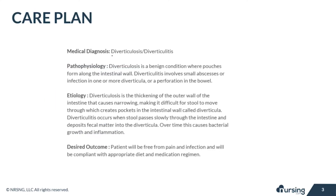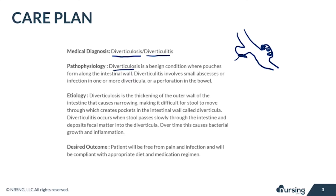Our medical diagnosis is diverticulosis and diverticulitis. Diverticulosis is a benign condition where pouches will form along the intestinal wall. Diverticulitis involves small abscesses or infections in one or more of the diverticula, or even a perforation in the bowels. Diverticulosis is the thickening of the outer wall of the intestine that causes narrowing, making it really hard for stool to move through, and that will end up creating those pockets. Those are called diverticula.